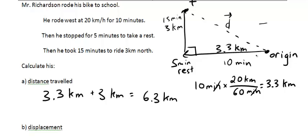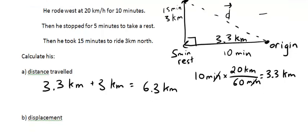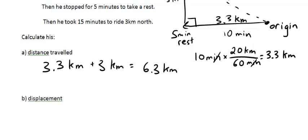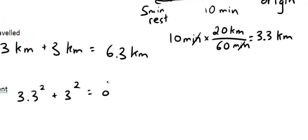So we've got 3.3 squared plus 3 squared gives us D squared, displacement squared.